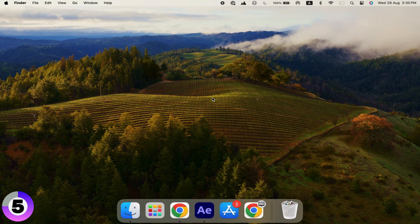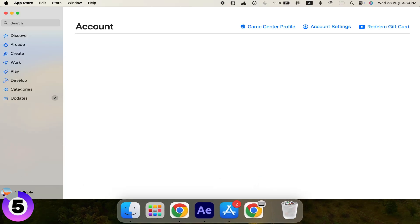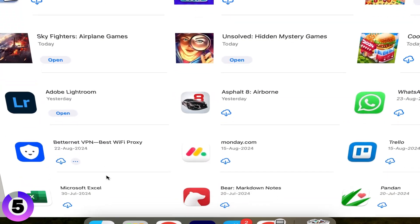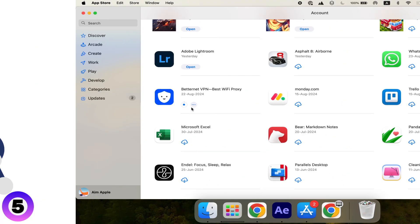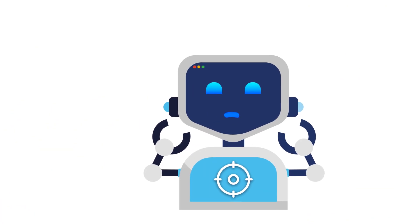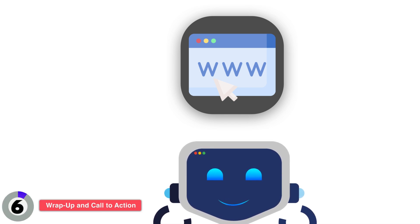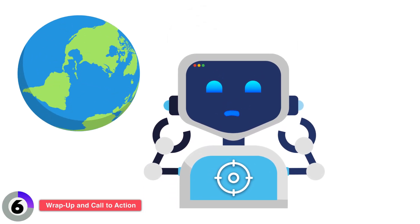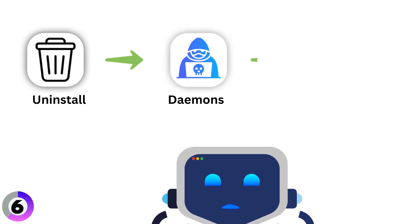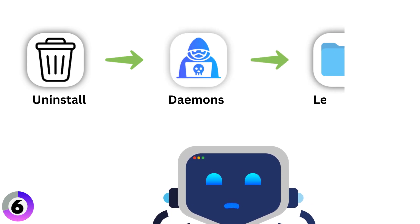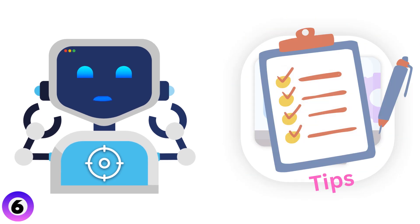If you've uninstalled an app and want it back, simply go to the App Store, search for the app, and reinstall it. For non-App Store apps, re-download them from the developer's website. And that's it. We've covered everything from basic uninstalls to handling daemons and leftover files. Keep your Mac running smoothly with these tips.